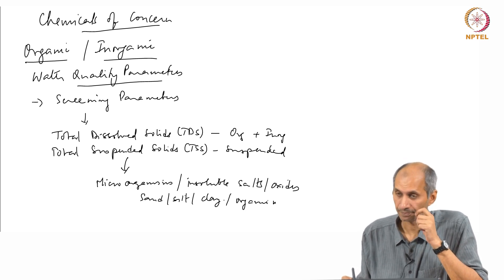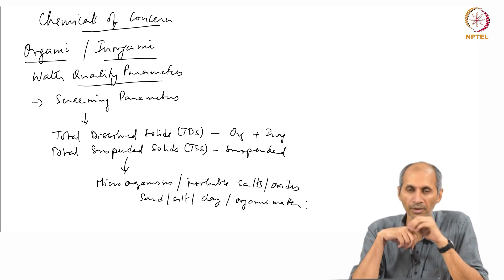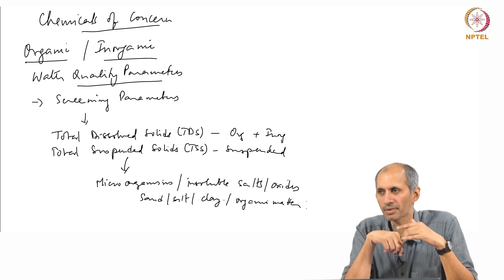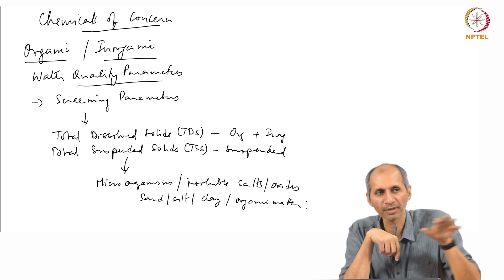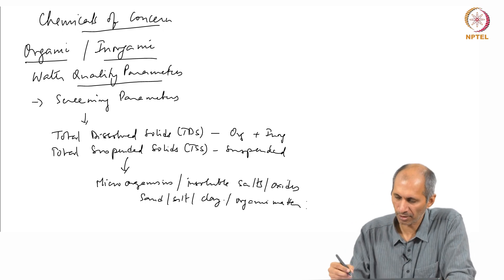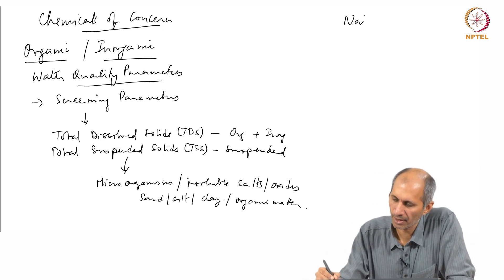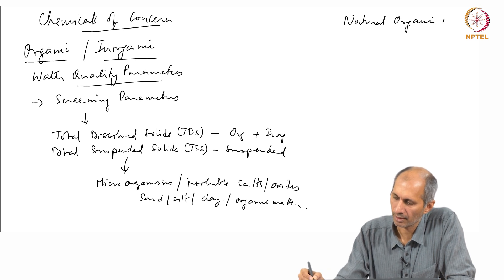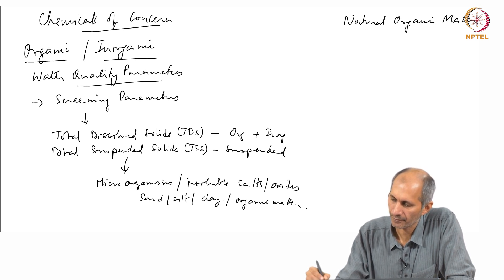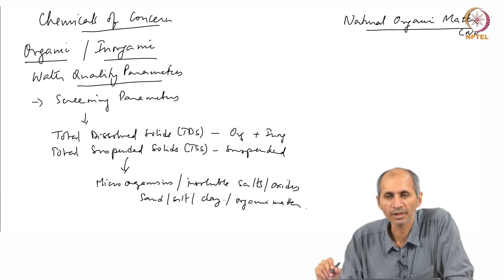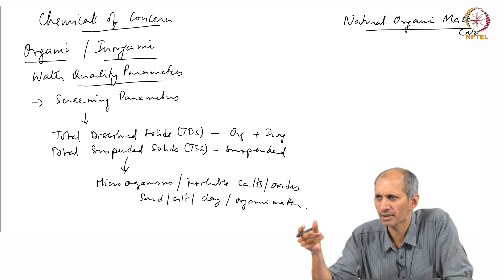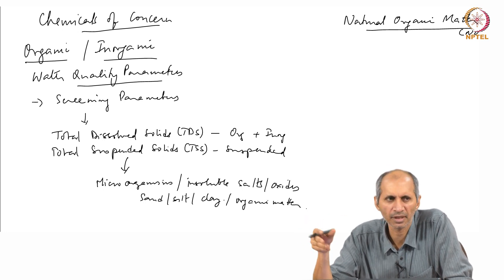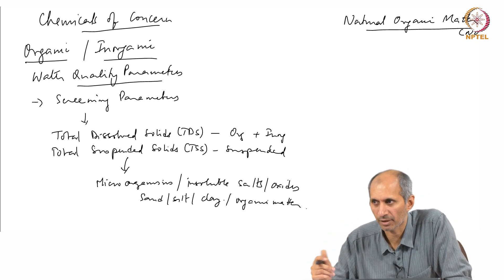TSS can also be organic matter and microorganisms. Microorganisms are part of organic matter, but we treat them separately. What we call natural organic matter — NOM, as a lot of people call it — is essentially non-living material. It is material that has already decomposed and is sitting there, and it has a very strong carbon background.